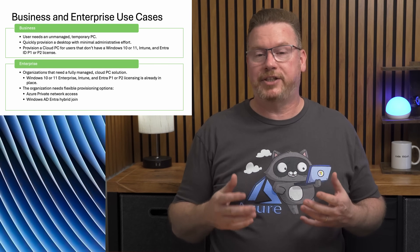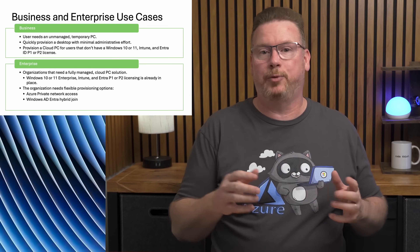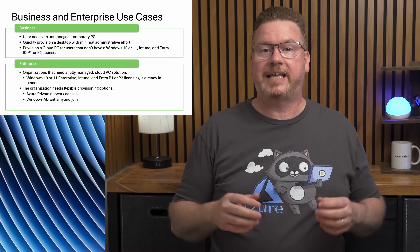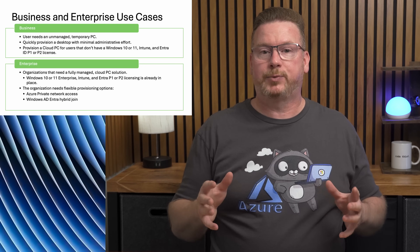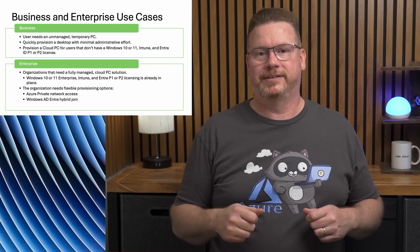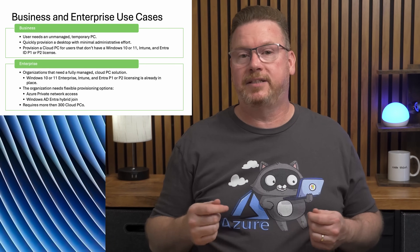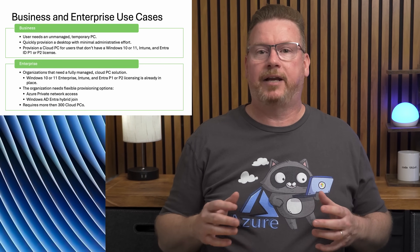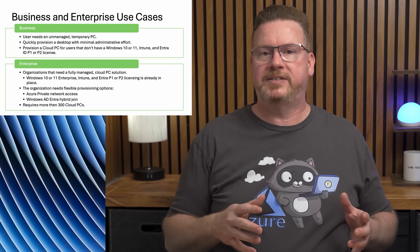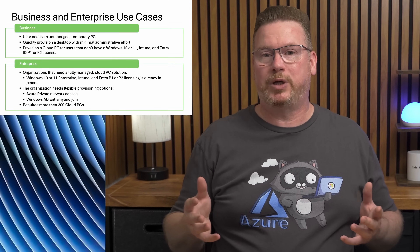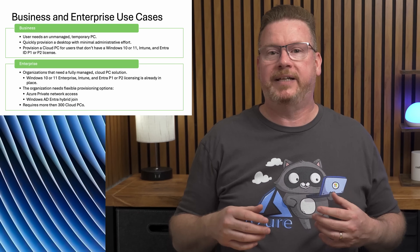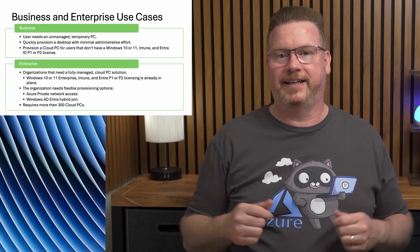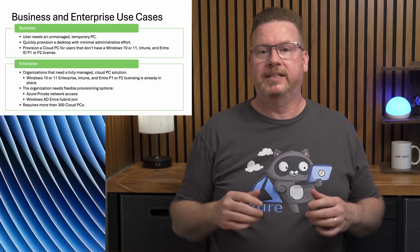Enterprise cloud PCs are for organizations that need fully managed cloud PC solutions. Many organizations already have the Windows Enterprise client license, Intune, and Entra P1 or P2, making those licensing prerequisites sunk costs that simplify the move to Windows 365. If a private network connection is required, or cloud PCs must be joined to Windows AD, or the organization plans to deploy more than 300 cloud PCs, Enterprise is required. Consider a Business license only for one-off temporary cloud PCs where management and customization aren't a requirement.